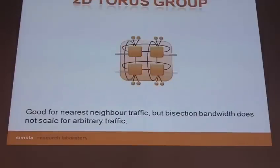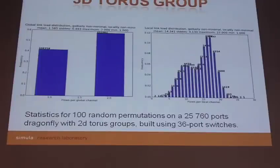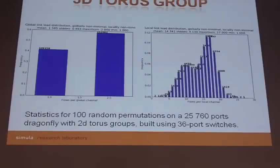If we repeat the same exercise using a 2D torus as the group topology: the torus is a well-known topology with good properties for nearest-neighbor traffic, but we know it doesn't scale well with regard to bisection bandwidth as the torus size increases. The global numbers are as before since we've only changed the group topology. But looking at the load within the group, the mean is 14 and the maximum is 17. So in this comparison, it's pretty clear that the torus is not a good idea as a group topology in the dragonfly, unless you specifically need to interconnect a set of smaller torus topologies.